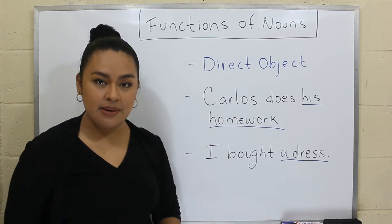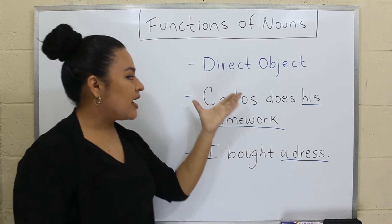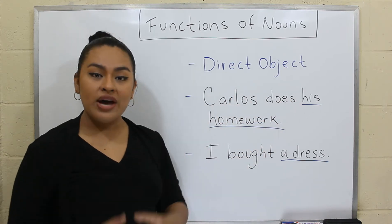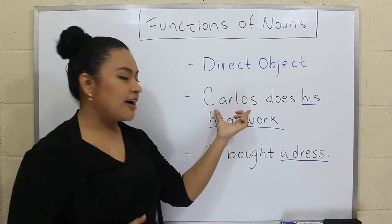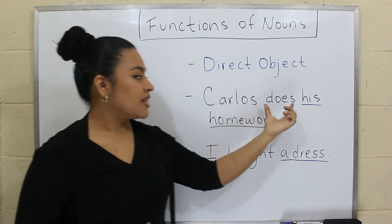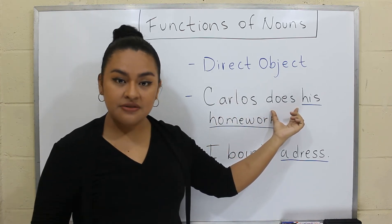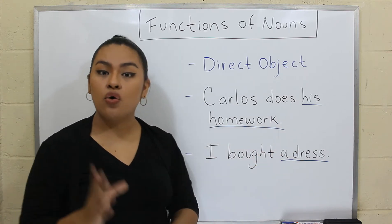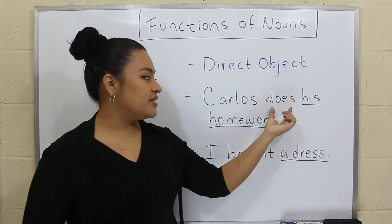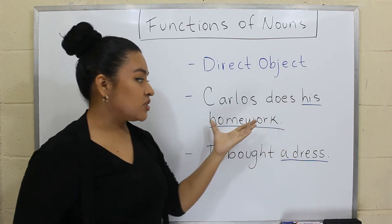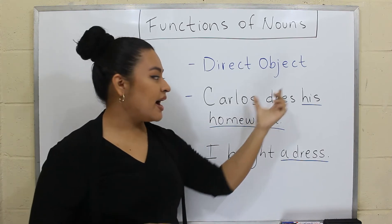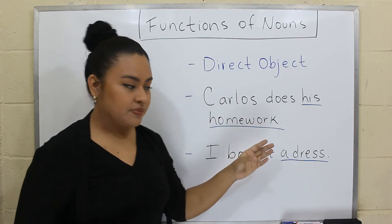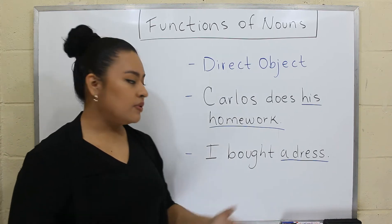Here we have some examples. Carlos does his homework. In this example, we have a subject. Carlos does is the verb. And then we have the direct object, or the receiver of the action — his homework. You can see we have underlined the direct object.